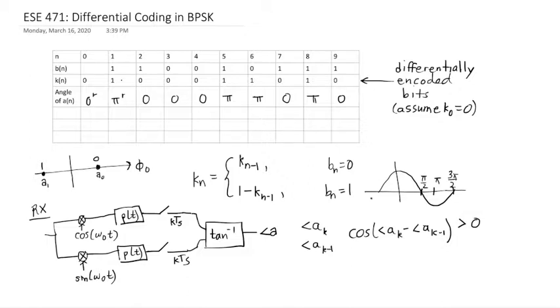And that means very likely that bₙ of zero was sent. And if it's less than zero, then I was probably changing the phases between the bits, and bₙ should be estimated to be one.